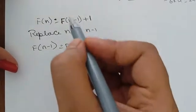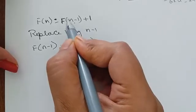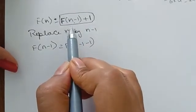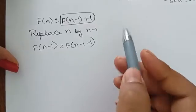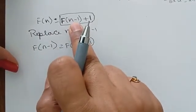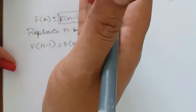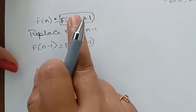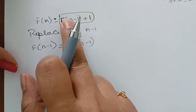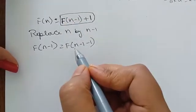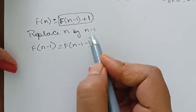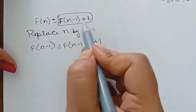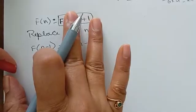First step — replace n by n-1: f(n) becomes f((n-1)-1) + 1, which is f(n-2) + 1 + 1. When you encounter the function, replace it with the entire thing, then keep the constant as it is. So we get f(n-2) + 2.